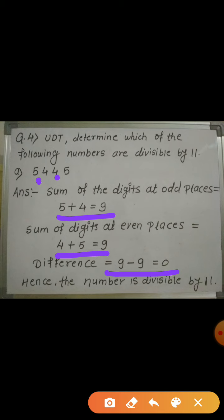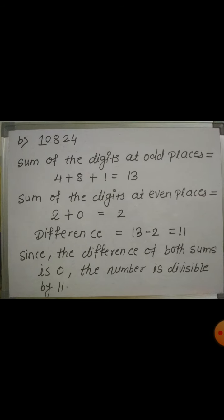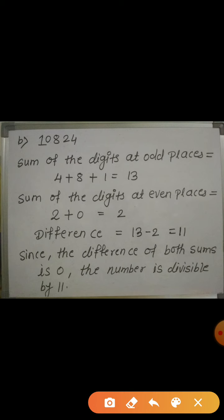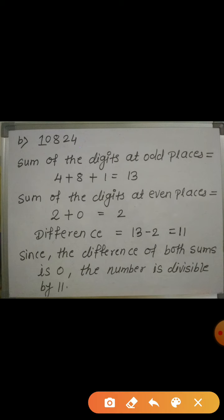Since the difference is 0, we can say that 5445 is divisible by 11. Now let's see the next example. The number is 10824. Again we check divisibility by 11. The digits at odd places are 4, 8, and 1. If we add them, we get the sum 13.